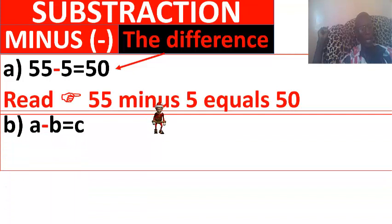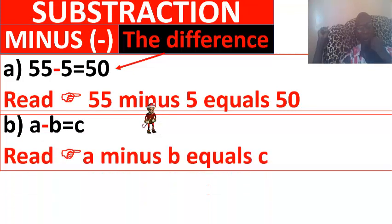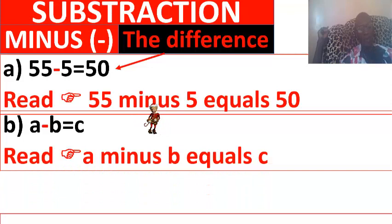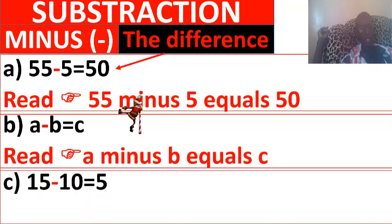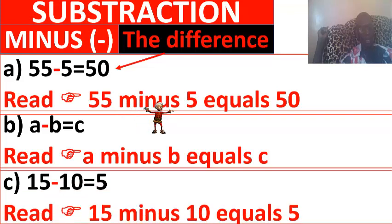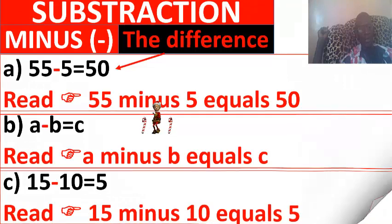B: A minus B equals C. C: 15 minus 10 equals 5. In English, 15 minus 10 equals 5.